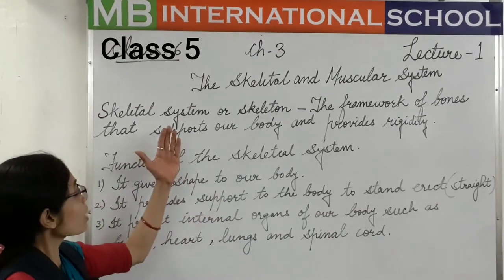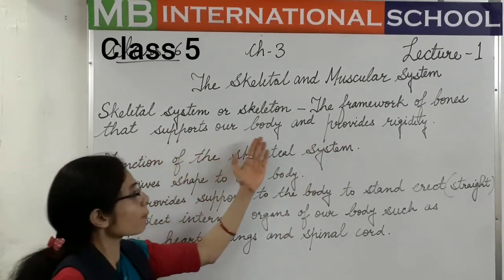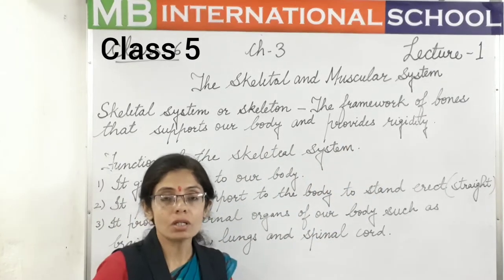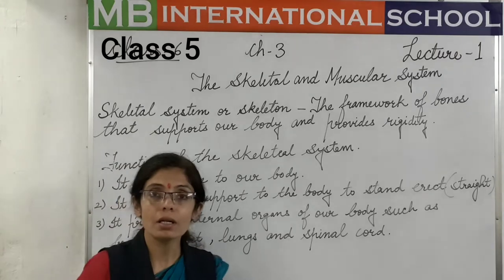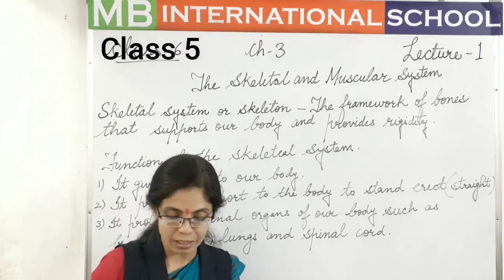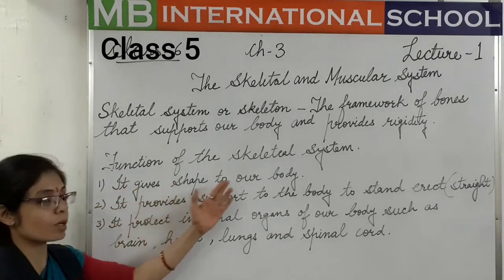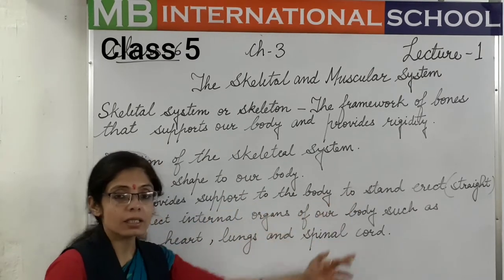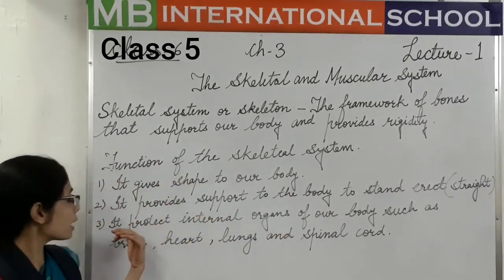The definition is that the skeletal system is the framework of bones that support our body and provide rigidity. Bones form a network structure which gives our body rigidity, gives our body a regular shape, and helps our body stand erect.